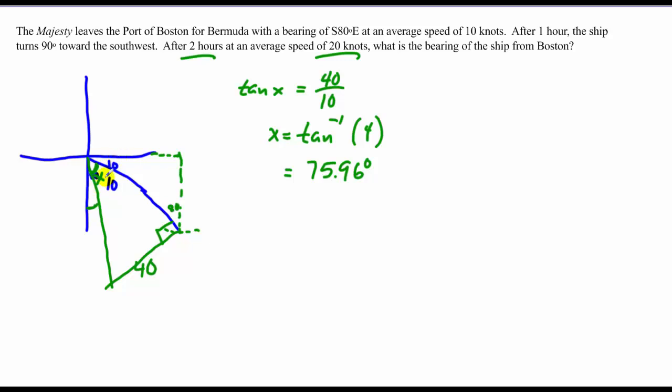So that's this green angle here. In addition, I have 10 degrees added to that, so plus 10 is 85.96 degrees. So therefore, this angle is the remaining amount, which is about 4.04 degrees. So in order to state that, from Boston, I go south 4.04 degrees in the easterly direction, and that's my bearing.